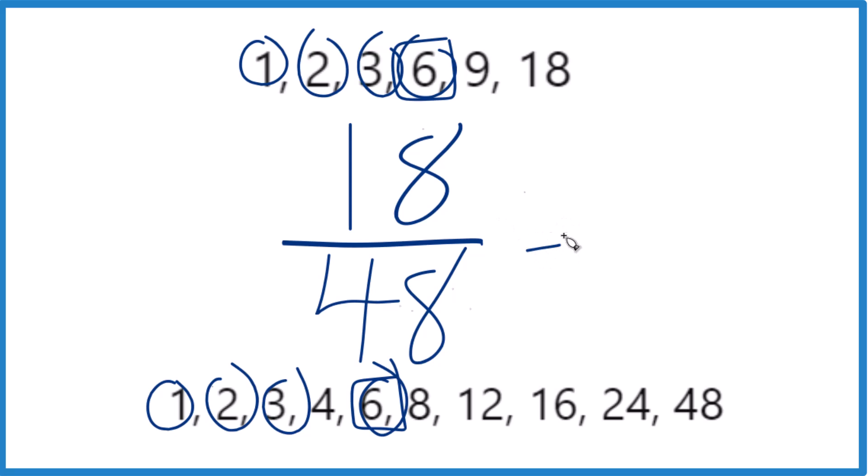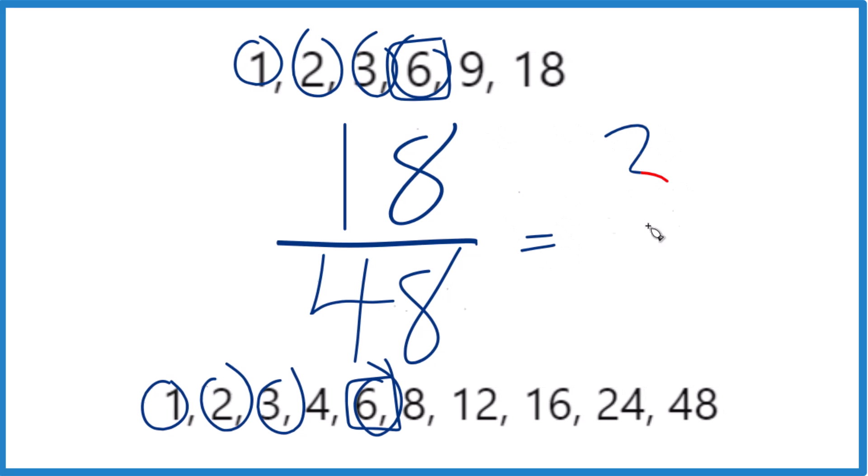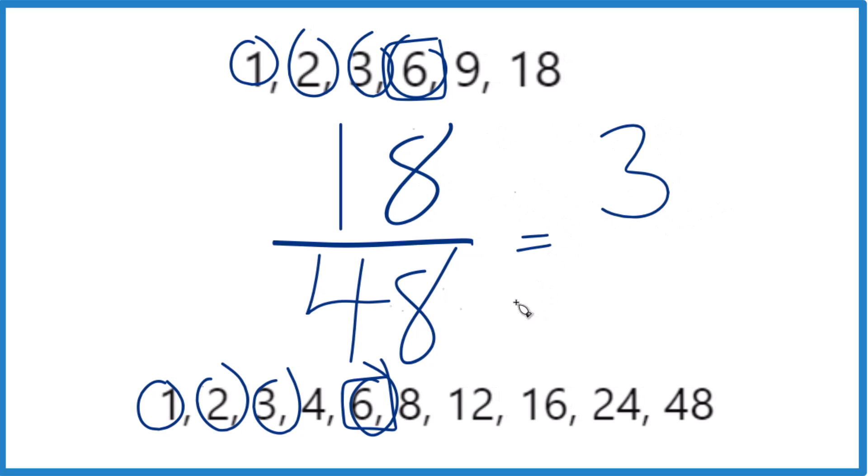So let's divide 18 by 6. That gives us 3, because 3 times 6 is 18. 48 divided by 6—8 times 6 is 48—so we end up with 3/8.